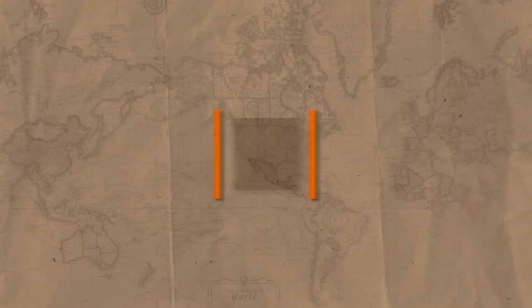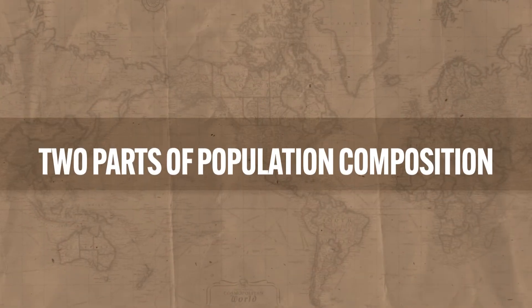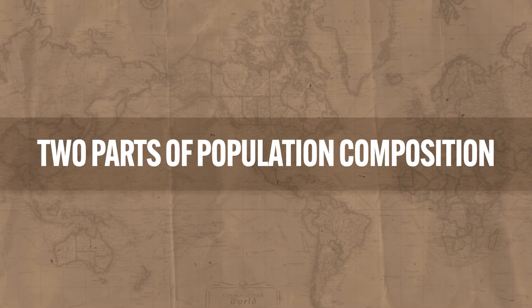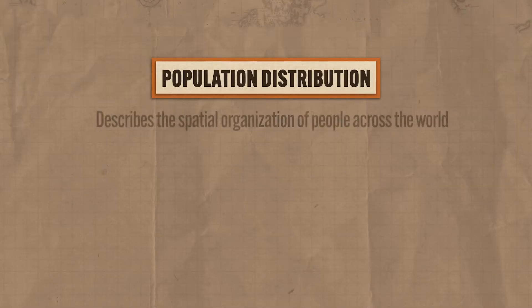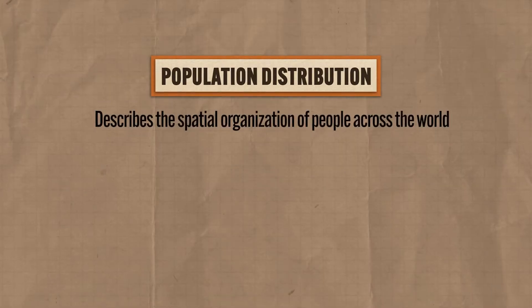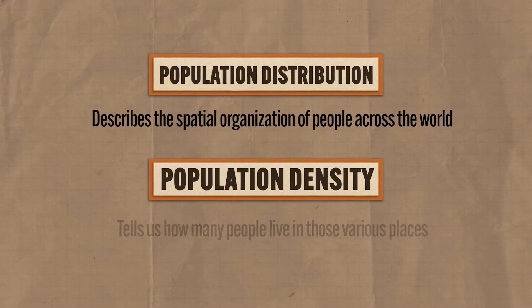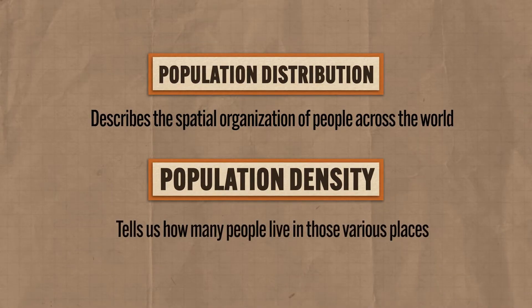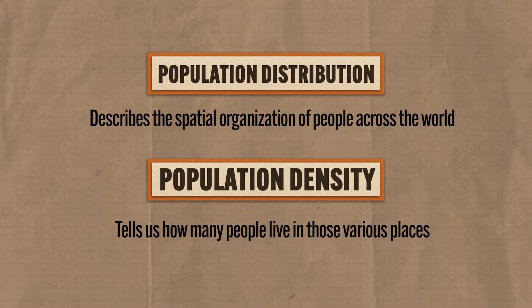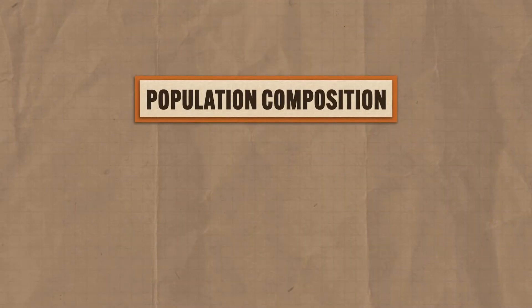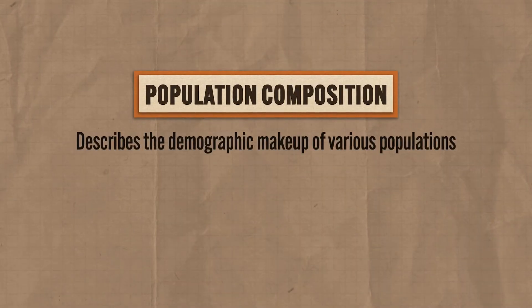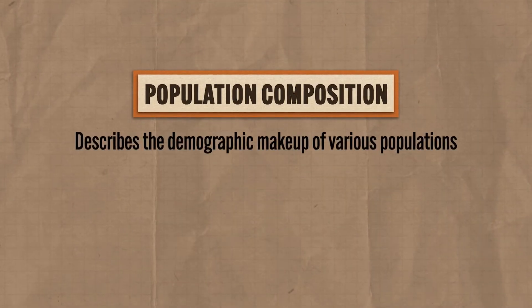Now, if you've been with me these last couple of videos, we've talked about population distribution, which describes the spatial organization of people across the world. And we've talked about population density, which tells us how many people live in those various places. But now we need to go one click deeper and figure out population composition, which describes the demographic makeup of various populations.